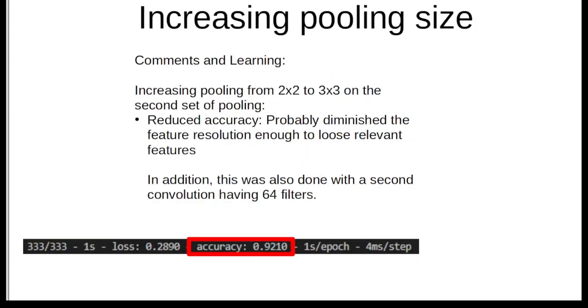Then I increased the pooling size with the first convolutional set of filters, increasing the pooling from a 2x2 matrix to a 3x3 matrix using the MAX algorithm, and it reduced the accuracy. Probably diminished the feature resolution enough to lose relevant features.